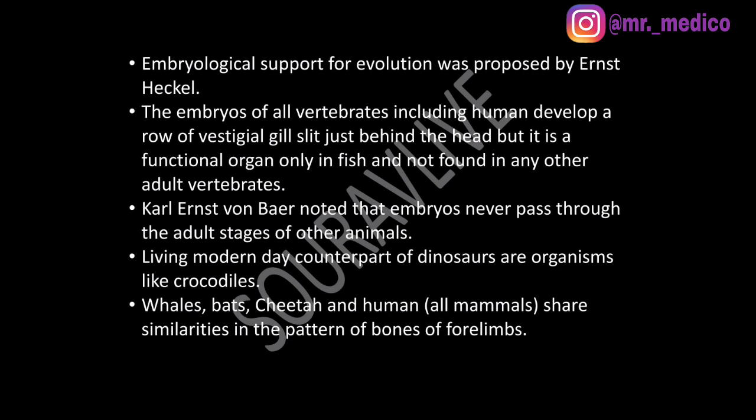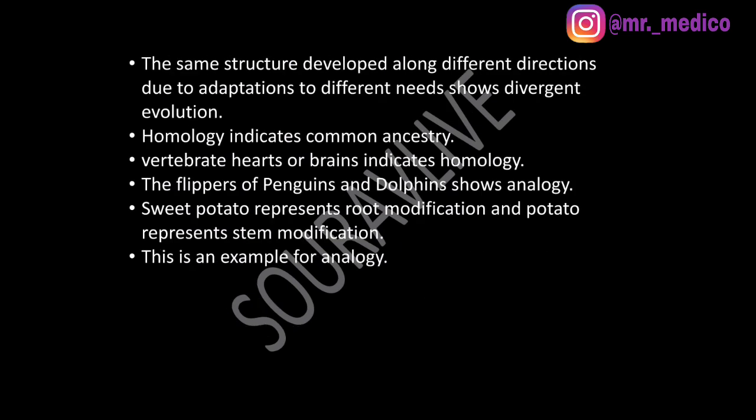Karl Ernst von Baer noted that embryos never pass through the adult stage of other animals. Living modern-day counterparts of dinosaurs are organisms like crocodiles. Whales, bats, cheetahs, and humans — all mammals share similarity in the pattern of bones of their four limbs. The same structure developed along different directions due to adaptation to different needs shows divergent evolution, where a common ancestor gives rise to different forms.